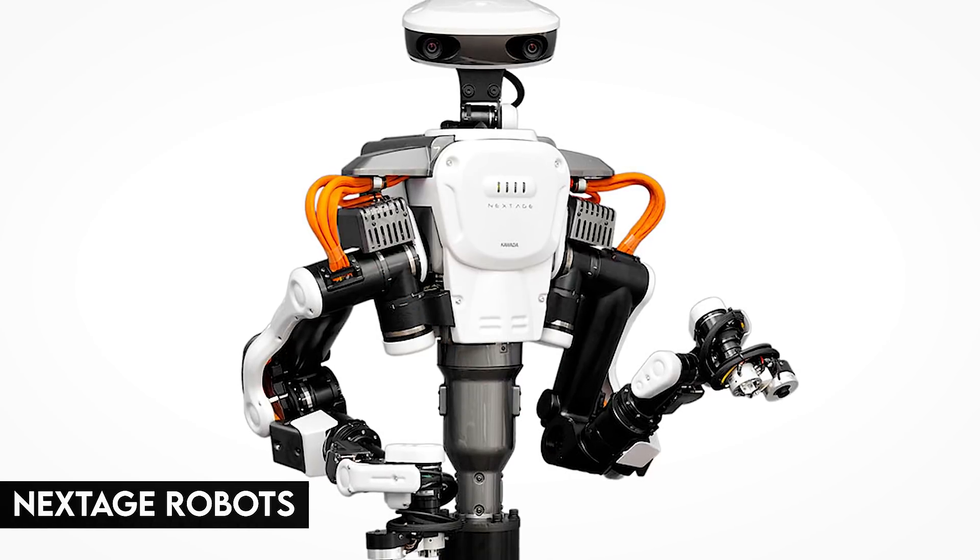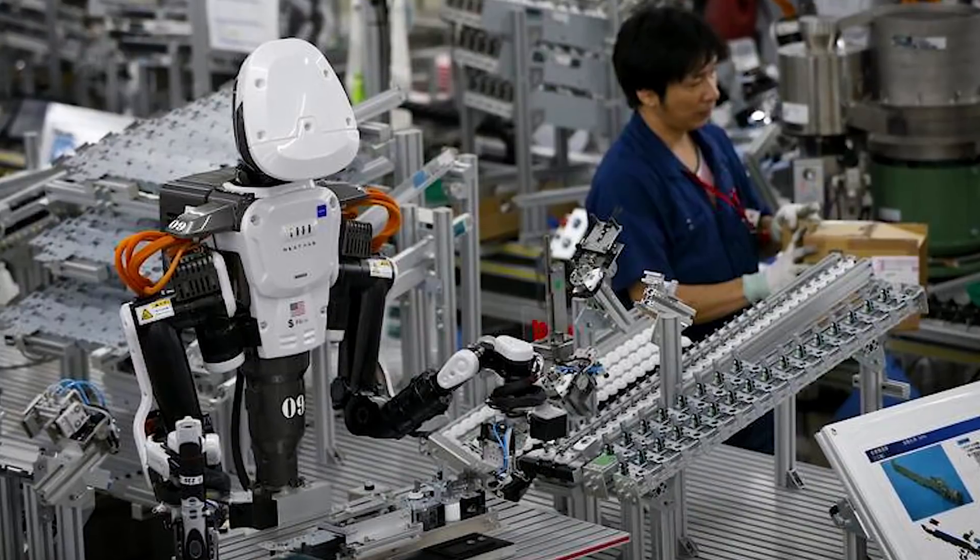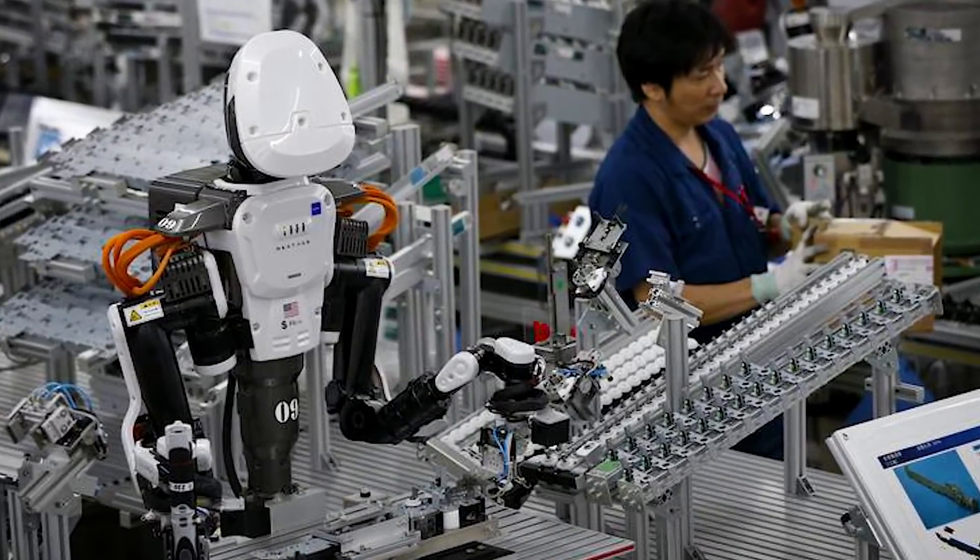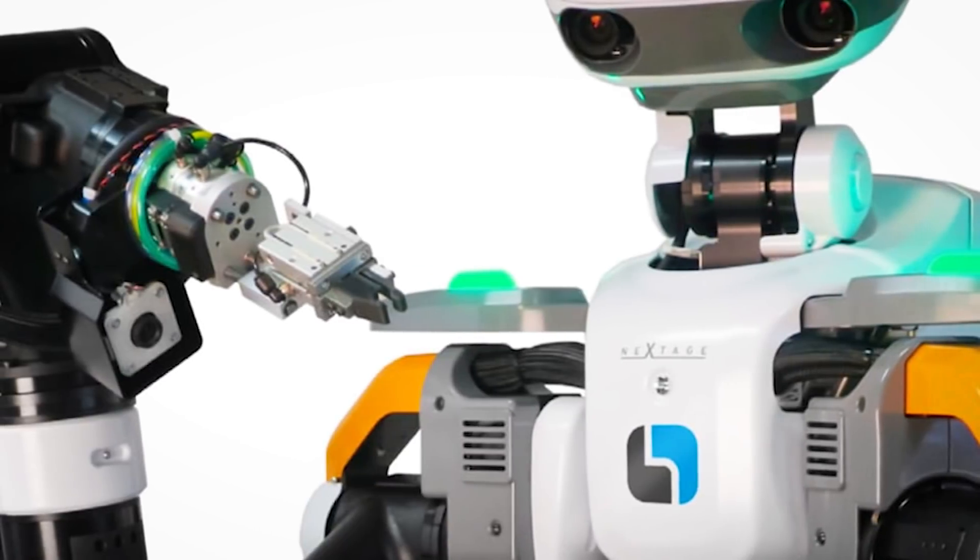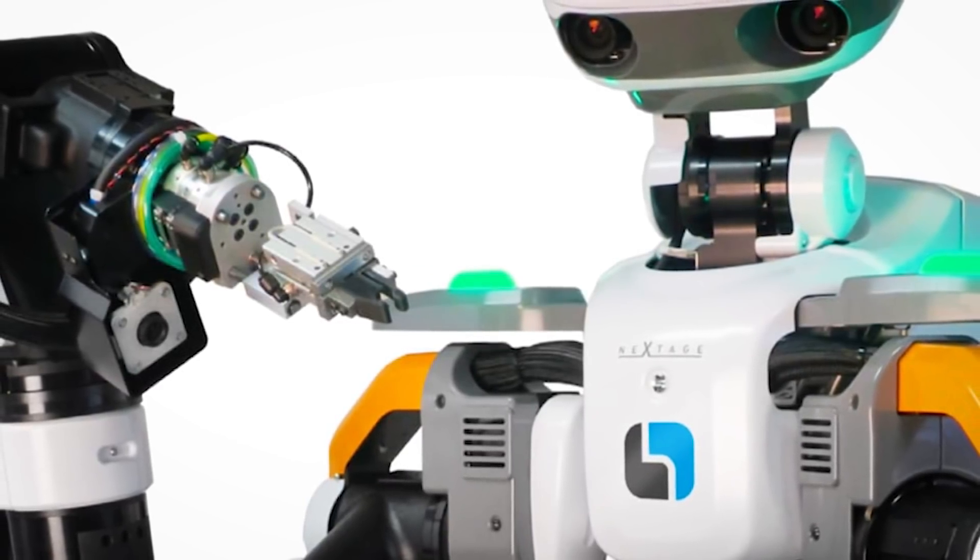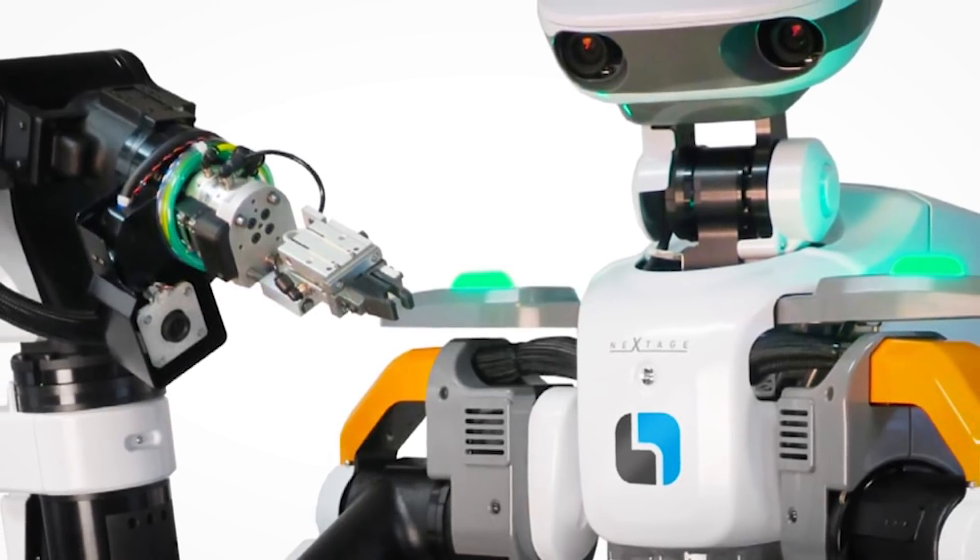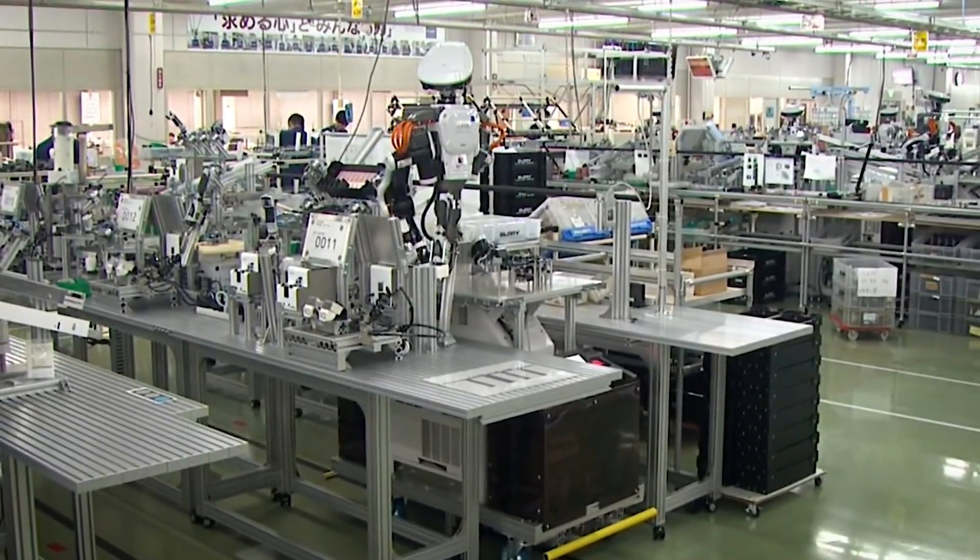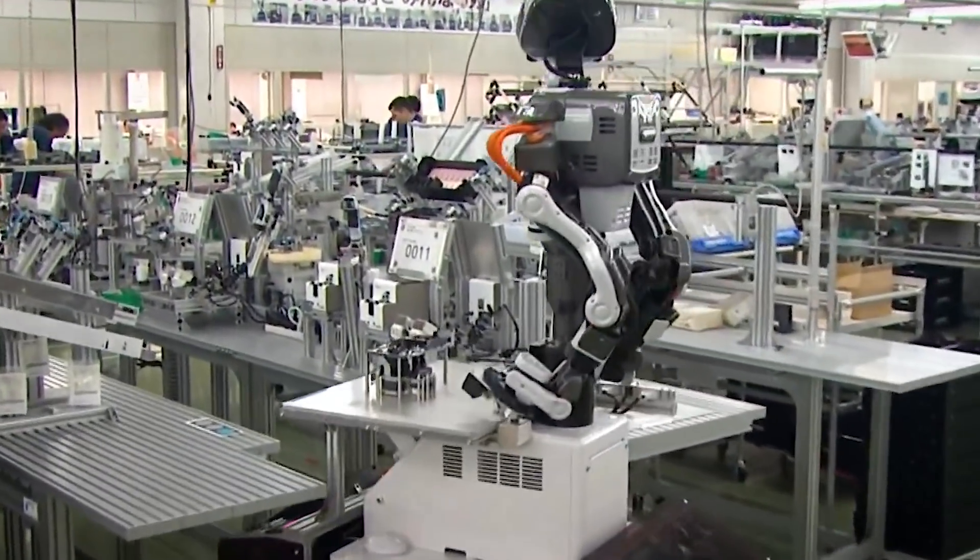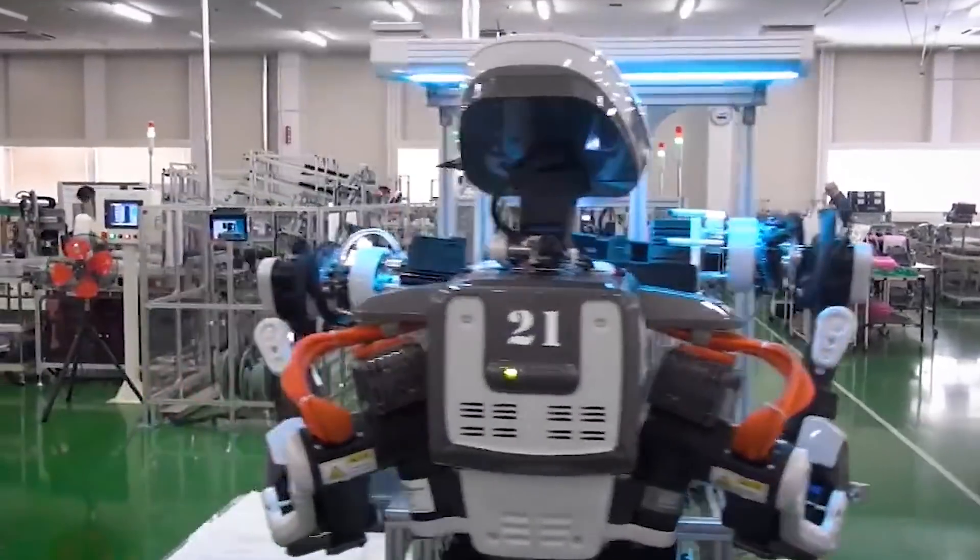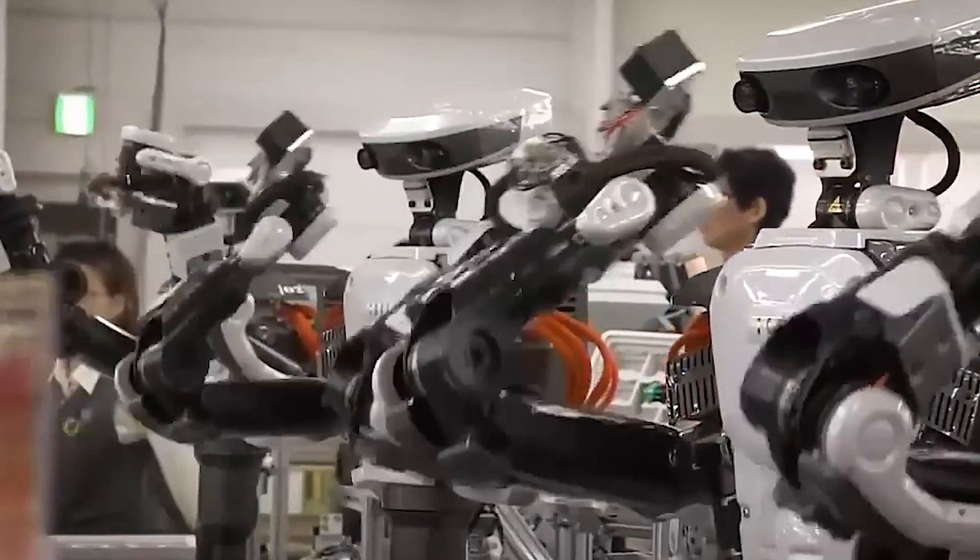Meanwhile, next-age robots from Kavata Robotics are already at work in Japan's Glory factory. 19 robots and 300 people work together to assemble equipment that sorts money for cash registers. The humanoid robots have cameras in their hands and are capable of superhuman force, speed, and precision when doing difficult repetitive procedures. Simply installing next-age where humans used to labor, it may be used without any safety obstacles. Multiple next-generation robots can work on the same task at the same time by coordinating their motions.